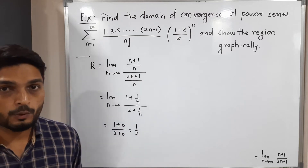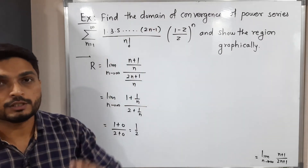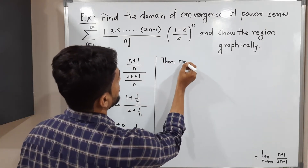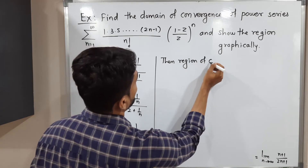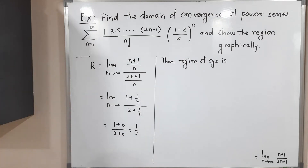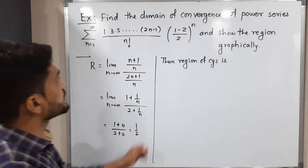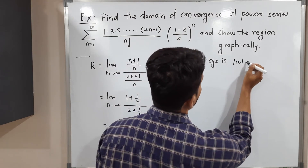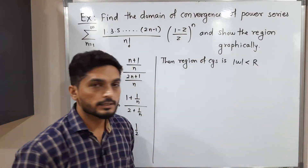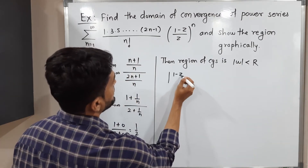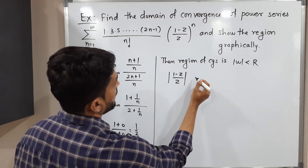Now for the region of convergence: the series converges for |w| < R, i.e., |w| < 1/2. Substituting back w = (1 minus z)/z, the condition becomes |(1 minus z)/z| < 1/2, where R = 1/2.